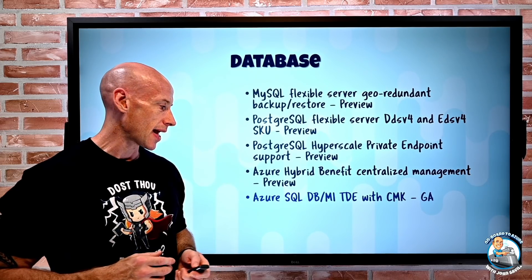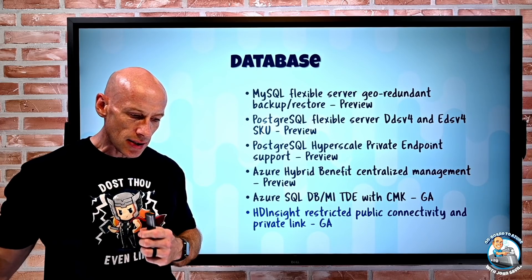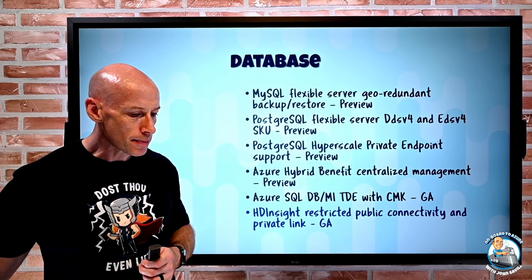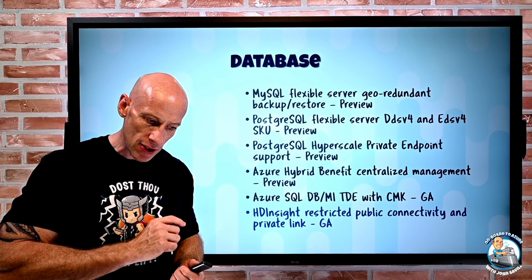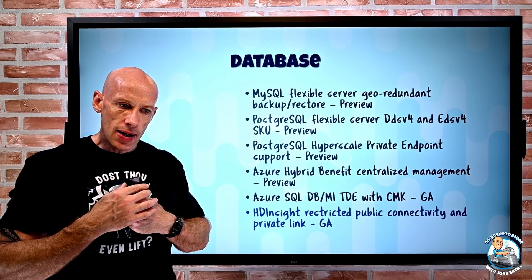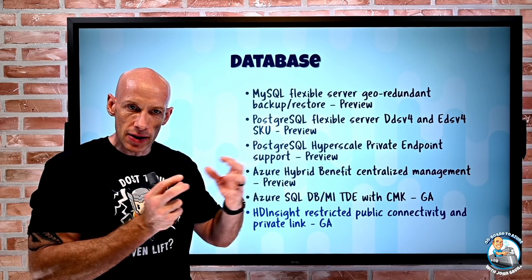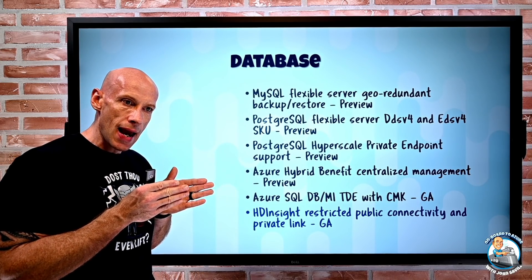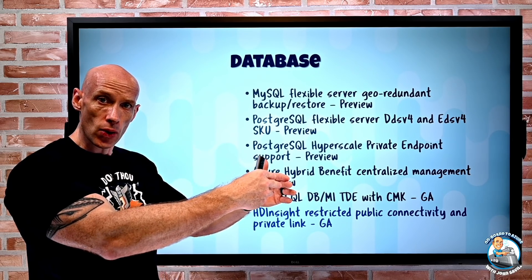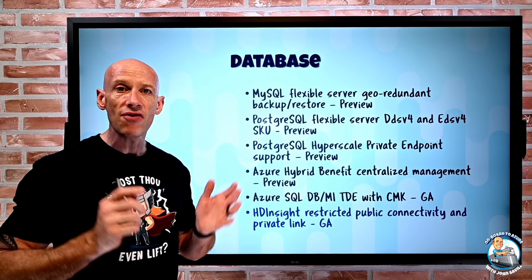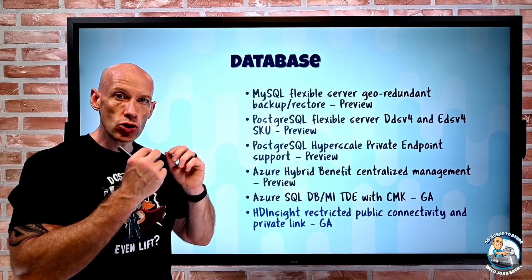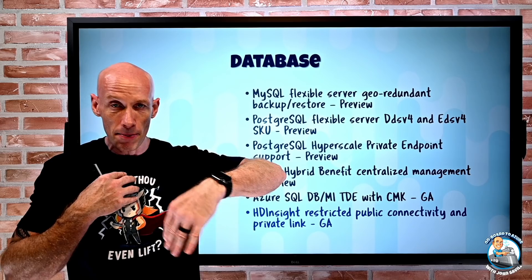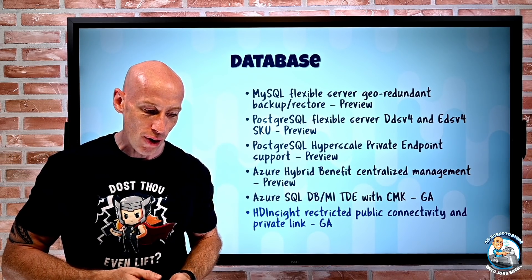HD Insight — the managed open-source service enabling frameworks like Hadoop, Apache Spark, Kafka, and others — has two updates. First, restricted public connectivity: cluster communication to the resource provider is now in new controlled networking with no public IP addressing for resources, and you can access private link-enabled services from HD Insight via private endpoints — SQL, storage, key vault, whatever you need. Second, you can now also use a private endpoint to get to your HD Insight instance. So HD Insight can reach things over private endpoints and you can reach HD Insight over a private endpoint.